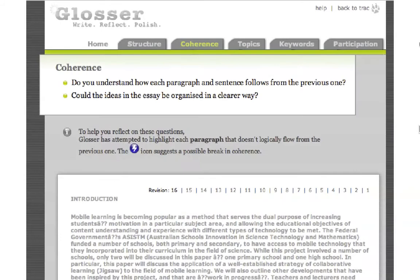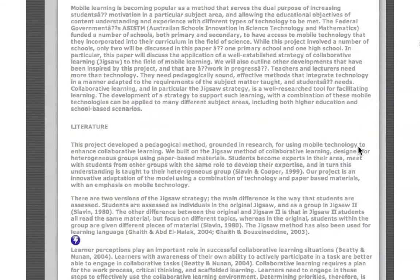In the coherence section, Glosser identifies possible breaks in the coherence of the writing. It inserts an icon at each point where one paragraph doesn't quite seem to flow smoothly from the previous.